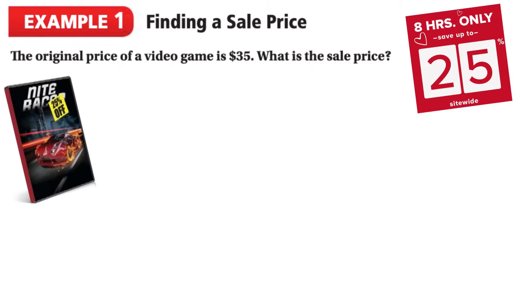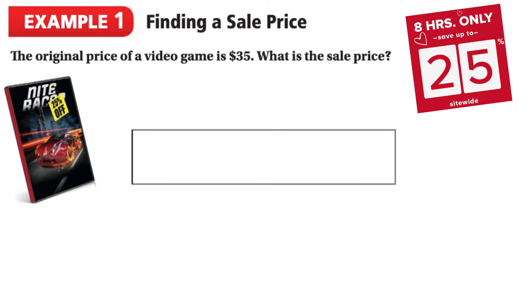In this first example we're going to figure out what the sale price is, which you've already done in that activity we covered the other day. We know that when we're finding a sale price, that means we must have gotten a discount. Looking at our first example, we have a video game that is originally going to cost $35, and we want to know what the sale price is — it is 25% off. We can visualize this problem by using a bar to represent the original cost of the video game.